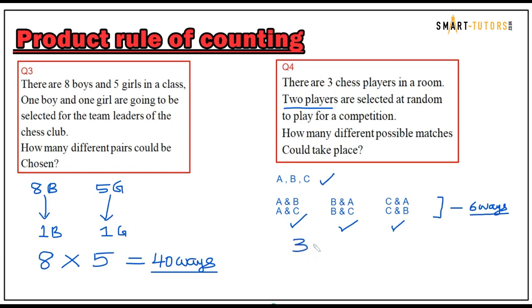Without listing them all out: there are three chess players, so the first player is chosen from three options, and after selecting one player you are left with two players, giving two ways to choose the second. Three times two is six ways.